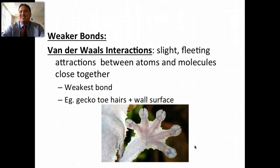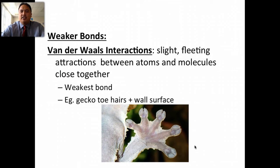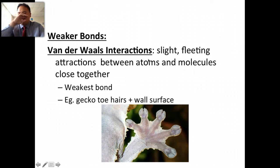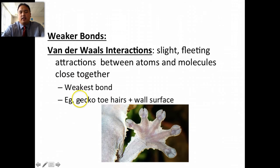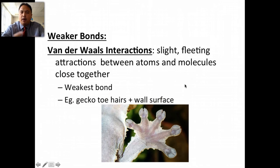The weakest bond is van der Waals. These are slight, fleeting attractions between atoms and molecules that are close together. It's the weakest bond. Think of this example shown here — gecko toe hairs on a wall surface. They're very, very weak bonds, and they're called van der Waals.